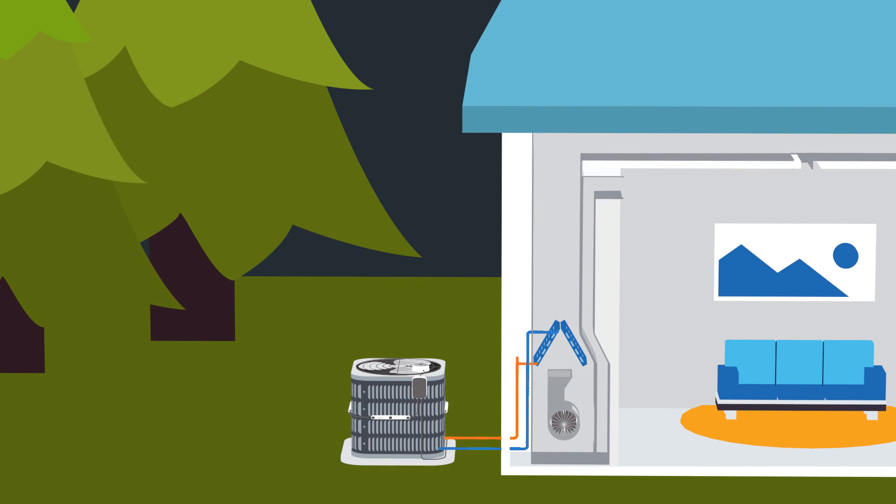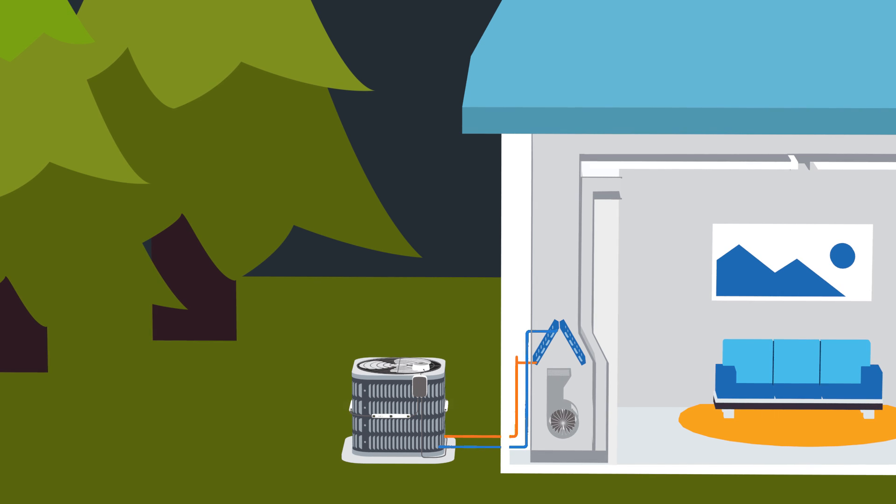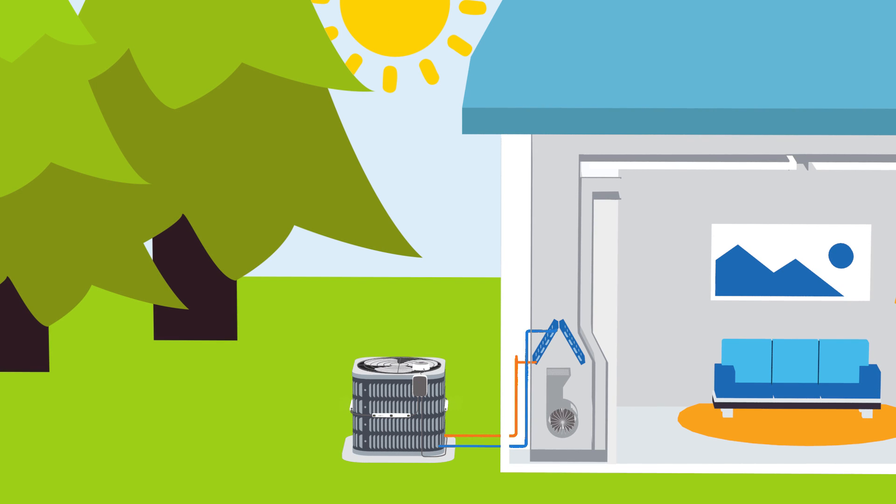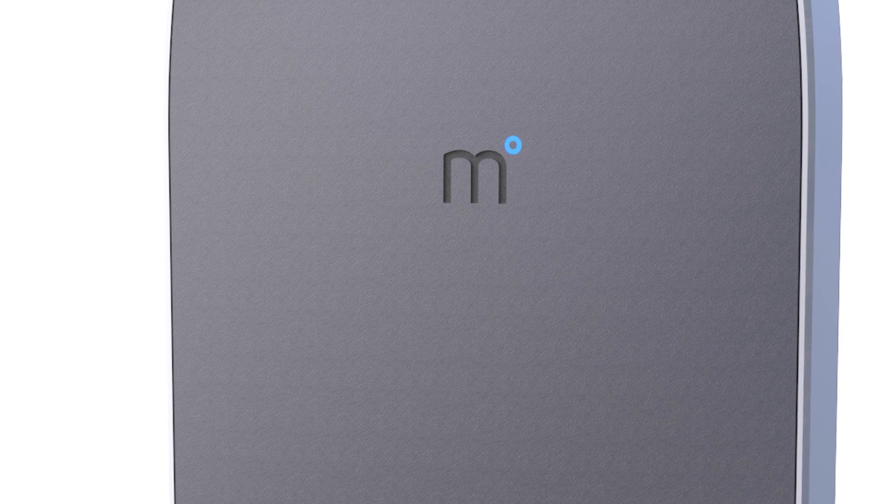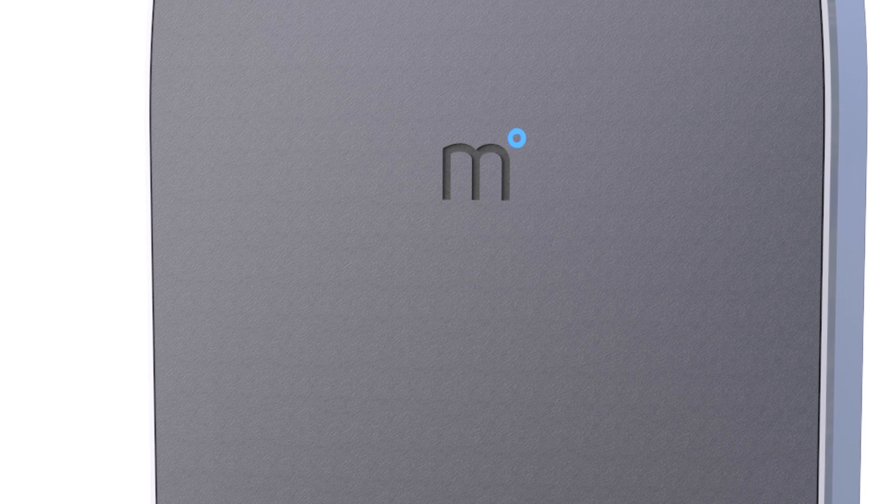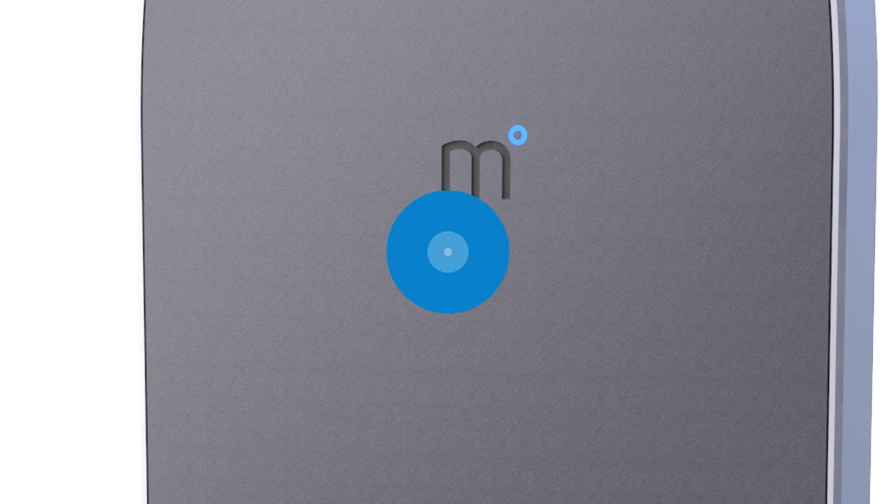Of course, Mistbox doesn't just stay on all the time misting around the clock. Mistbox knows when your unit is running and when an efficiency boost is needed due to weather conditions. Using readings pulled in real time from its sensors, Mistbox is able to minimize water consumption while maximizing power savings.